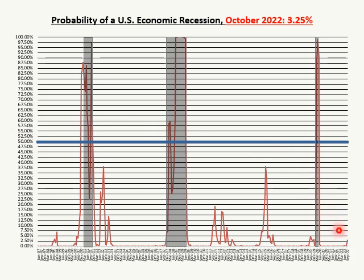The critical level is the 50 percent level — this blue horizontal line here. It's quite a distance away from 50 percent. The gray shaded areas are the approximate locations of the last three U.S. economic recessions, as determined by the National Bureau of Economic Research.